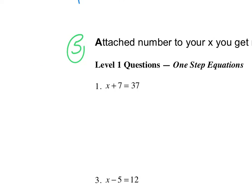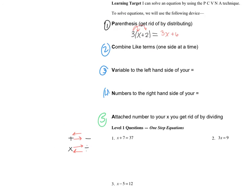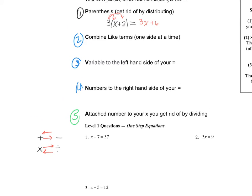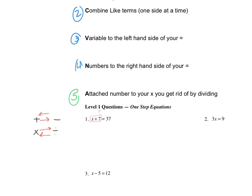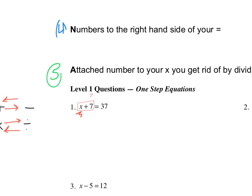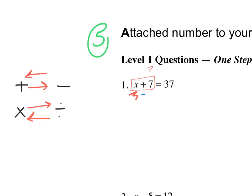Here's what I need us to say to ourselves. We know that we have addition, subtraction, multiplication, and division. The way we get rid of addition is to subtract it, and the way to get rid of subtraction is to add it. The way to get rid of multiplication is to divide it, and the way to get rid of division is to multiply it. So we want to get x by itself. We go through the procedure: do we have parentheses? No. Can I combine my x and my 7? No, because they're not like terms. My x is already on the left-hand side. So I need to get rid of this positive 7 — I'm going to subtract 7 from both sides. My 7s cancel and I get x equals 30, because 37 minus 7 is 30.